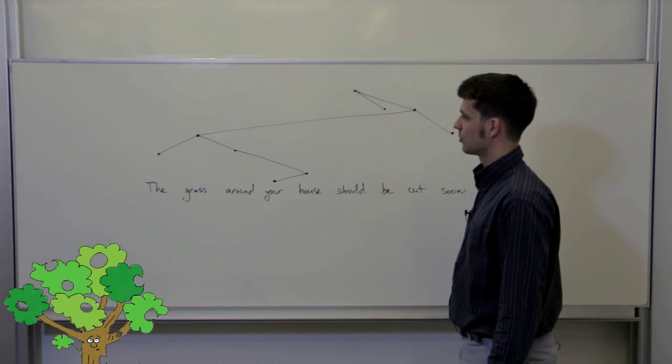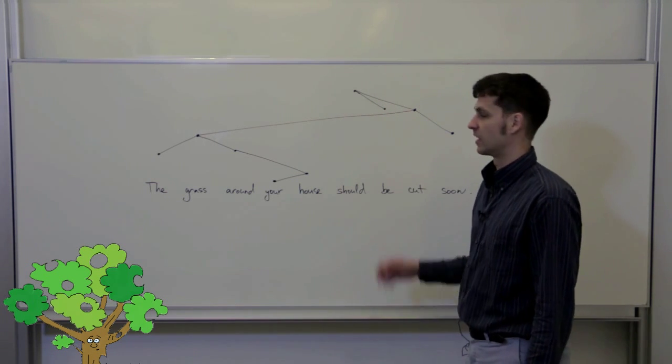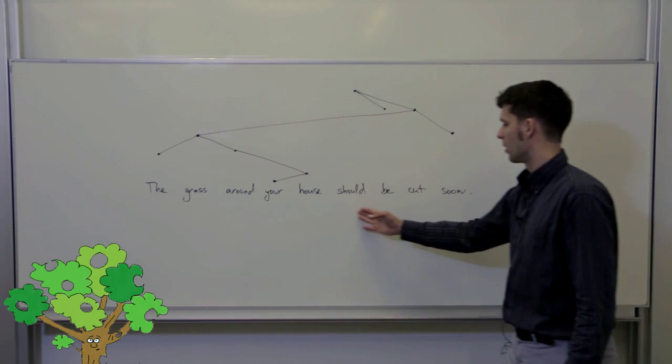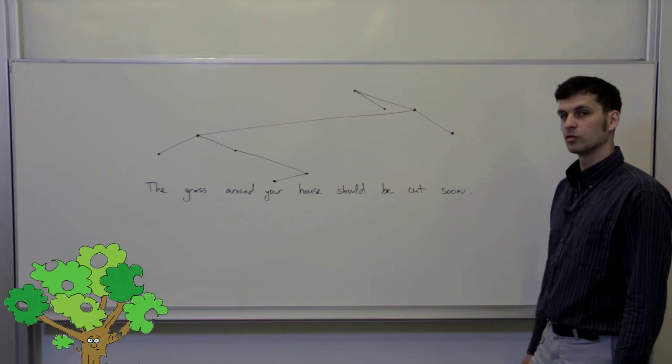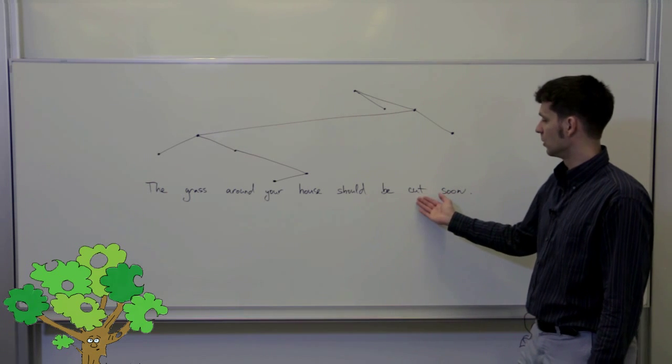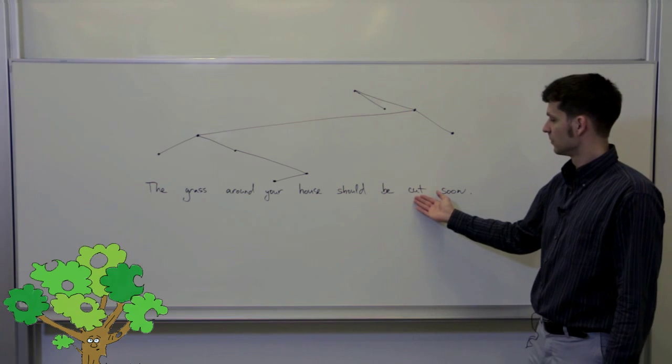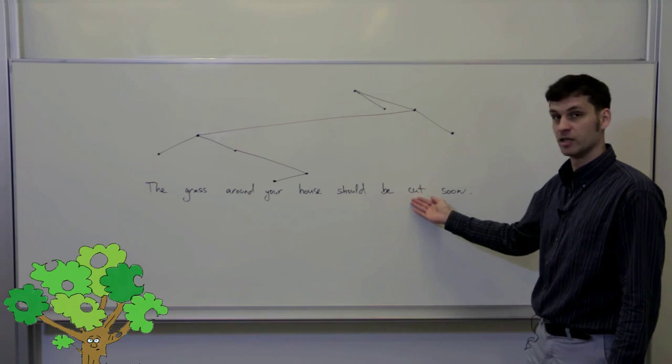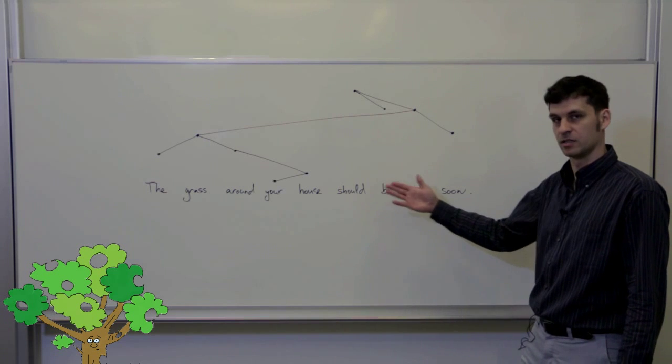That was one reason for representing sentences as dependency trees: to adequately capture non-projective constructions. Another reason is the context of neighbors in the dependency analysis. Take this example sentence: The grass around your house should be cut soon. If we want to translate this sentence, for example into Czech, we will have to choose a translation for this verb 'cut.' And there is not a single verb for cutting in Czech. The translation actually depends on what is being cut, whether it is grass, bread, or taxes.